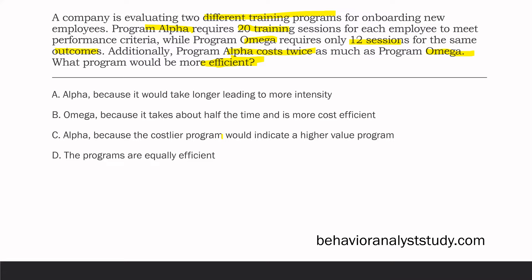Taking longer doesn't mean it's going to be efficient, and assuming more intensity is not backed by any information in the question. B: Omega, because it takes about half the time and is more cost-efficient — that's both true. It takes about half the time and costs about twice as less as Alpha. C: Alpha because cost would indicate higher value — not necessarily, and no information in the question indicates that. Given our information, Omega is going to be more efficient: training duration is reduced and cost is nearly half that of Alpha.